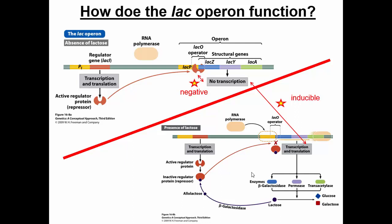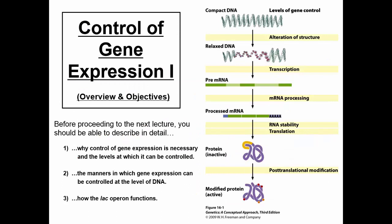One final thing about the lac operon: you might notice a circular logic problem. How can you get production of permease when you need permease to bring lactose into the cell in the first place? The answer is that when we say no transcription, we don't really mean zero. We mean very, very little transcription. There's always a trickle of transcription allowed to get this process started — like a dimmer light switch that's just very dim rather than fully off. That solves the chicken-and-the-egg problem. That's control of gene expression one; please let me know if you have any questions.